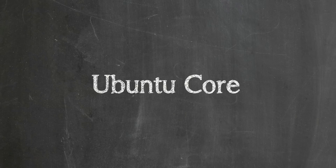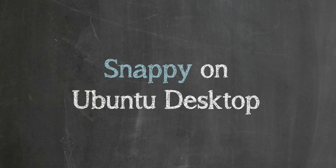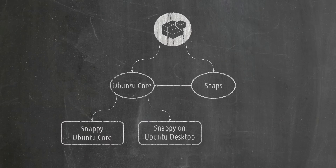Ubuntu Core is the platform on which snaps can be installed — essentially a minimal install of Ubuntu based around snaps for managing software. Ubuntu Core is part of both Snappy Ubuntu Core and Snappy on Ubuntu Desktop. Snappy Ubuntu Core is a transactionally updated version of Ubuntu for Internet of Things devices, cloud usage, and more. Snappy on Ubuntu Desktop is the full Ubuntu Desktop with Ubuntu Core integrated for usage with the Snappy infrastructure and Snap packages. To summarize: Snappy is the informal name for everything related to it; Snap is the universal package format introduced by Ubuntu; Ubuntu Core is the platform that snaps are installed on; Snappy Ubuntu Core is the snaps-only minimal version of Ubuntu for IoT, cloud, and more; and Snappy on Ubuntu Desktop is the desktop version of Ubuntu with Ubuntu Core integration to utilize snaps.